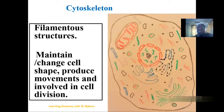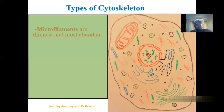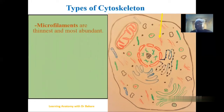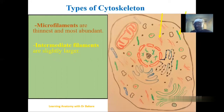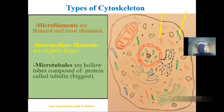The cytoskeleton are filamentous structures or networks seen within the internal configuration of the cell. They help to maintain the shape of the cell, aid in movement, and also in cell division. There are three types: the microfilament, which are the tiniest and most abundant, involved in movement and maintaining cell shape; the intermediate filament, which is slightly larger and also involved in maintaining shape and enhancing movement; and the microtubules, which are small tube-like structures particularly involved in movement, maintaining shape, and cell division.